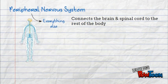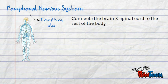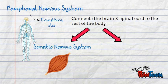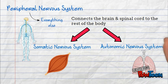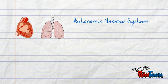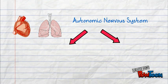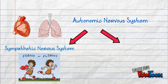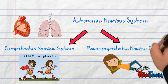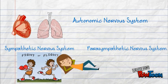The peripheral nervous system connects the brain and spinal cord to the rest of the body. It has two divisions: the somatic nervous system, which is comprised of voluntary muscle, and the autonomic nervous system, which is comprised of involuntary muscles such as the heart and lungs. The autonomic nervous system can be further divided into the sympathetic nervous system, which controls the fight-or-flight response, and the parasympathetic nervous system, which controls the rest and digest systems.